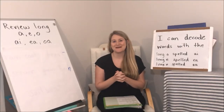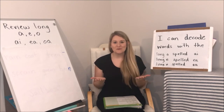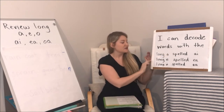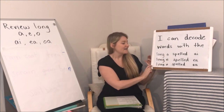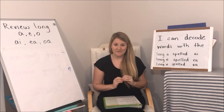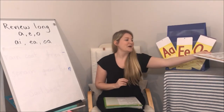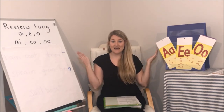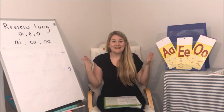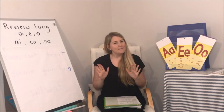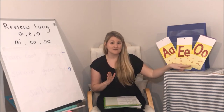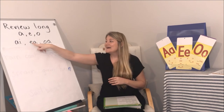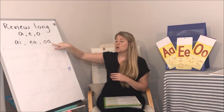Hello, first grade readers and writers! This week is going to be a lot of fun — it's a review week. We are going to decode words with the long A spelled A-I, the long E spelled E-A, and the long O spelled O-A. These are sounds that you know really well. We know our long vowel cards, and we have been working on these sounds. A gets to say A, E gets to say E, O gets to say O. What makes them a little tricky is they have a lot of spelling patterns with those sounds. We are going to focus on A-I saying A, E-A saying E, and O-A saying O this week.